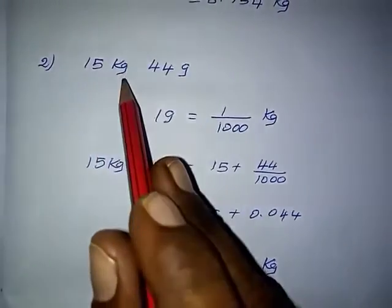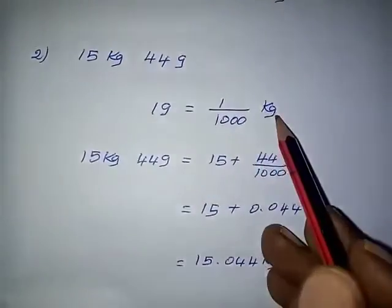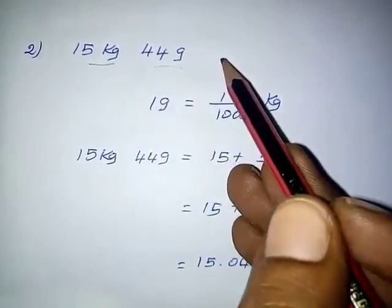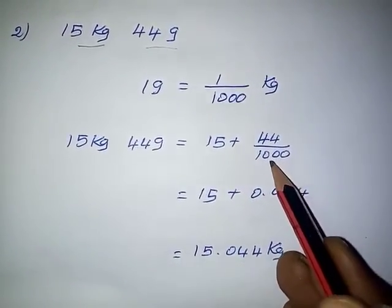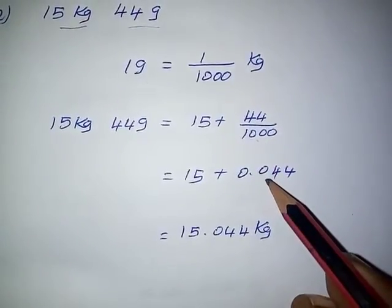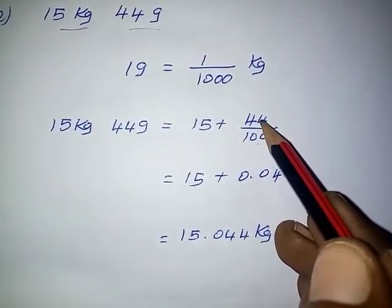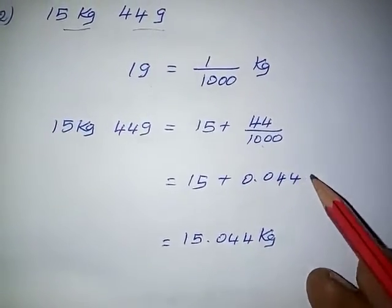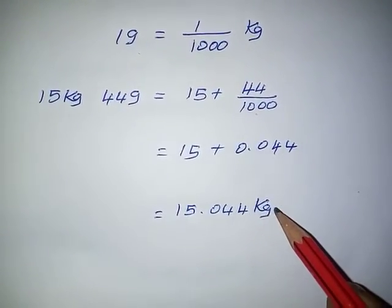Question number 2: 15 kg 44 gram. 1 gram equal to 1 by 1000 kilogram. So 15 kg is the integral part and 44 gram is the decimal part. We write 15 plus 44 by 1000. Since the numerator has only 2 digits, we add a leading zero to get 0.044. Joining integral part plus decimal part: 15 plus 0.044 kg.